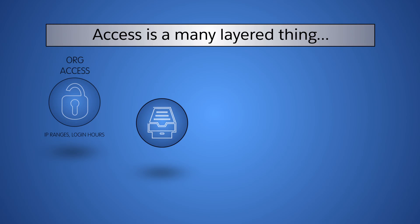Once in the org, you must grant users access to objects. This is done at the profile level. For example, your salespeople need access to accounts, contacts, and opportunities, and your call center reps need access to accounts, contacts, and cases.